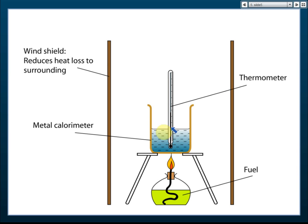If heat is lost to the surroundings, our calculation is not accurate, so we get only an approximation. To improve accuracy, we use a metal calorimeter because it absorbs heat better. We include a thermometer to measure temperature change, and a windshield to prevent wind from blowing into the apparatus — wind would blow heat away from the lamp and increase heat loss to the surroundings.